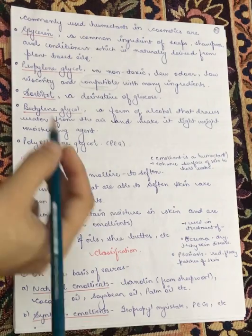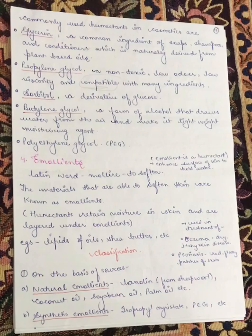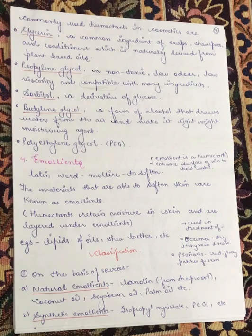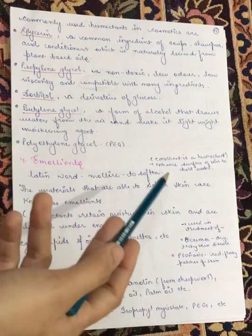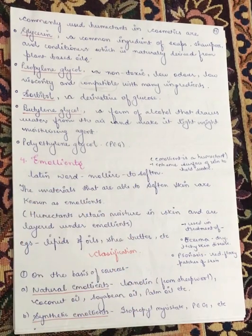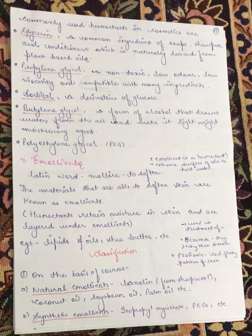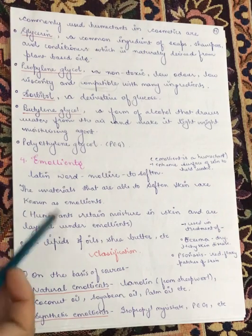In this video we are going to study about emollients. We should not confuse emollients with humectants, because their ultimate work is very similar. They are two different ingredients used in cosmeceutical preparations. The word emollient is derived from a Latin word meaning 'to soften.' An emollient enhances the surface of the skin to hold water, while humectants retain moisture in the skin and are layered under emollients.